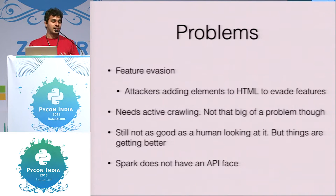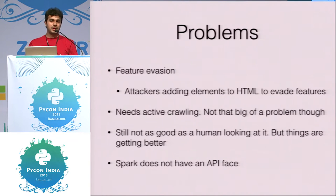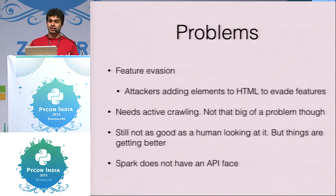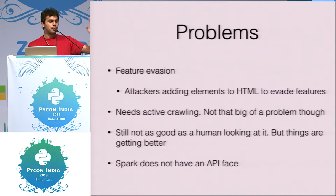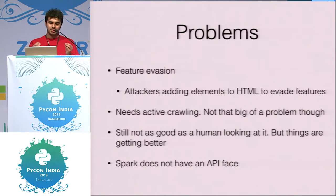Getting new pages continuously requires dedicated infrastructure to fetch and crawl web pages and update your model every time. Also, Spark does not have a native API face — you can't just take a model and have it accept input on port 80 and write responses to a database. You have to build pipes between components, and it gets messy very fast.